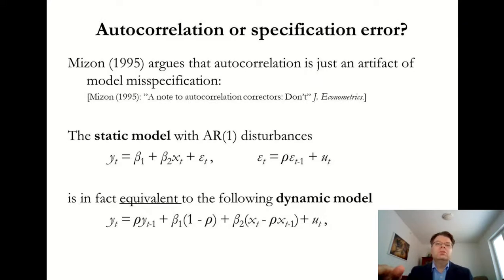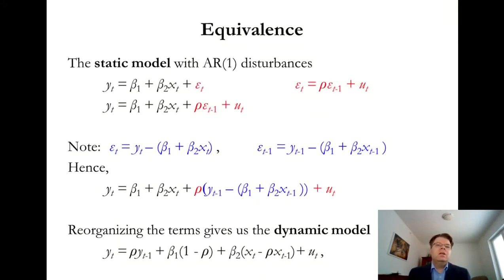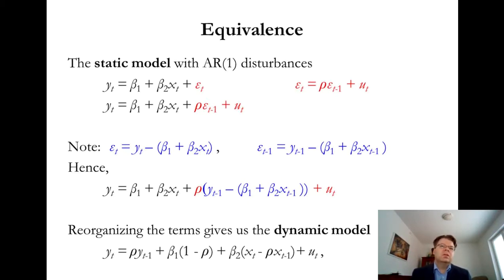In that paper, Miessen formally shows that the static model with AR1 disturbances is completely equivalent to a dynamic model where there is no autocorrelation in the error term, but the autoregression is explicitly modeled through the lagged value of the dependent variable y. I'll sketch the proof: from the AR1 process, we substitute epsilon_t with rho times epsilon_{t-1} plus u_t, where u_t is the white noise term. From the regression equation, epsilon_t equals y_t minus beta_1 minus beta_2 times x_t, and similarly for t minus 1.